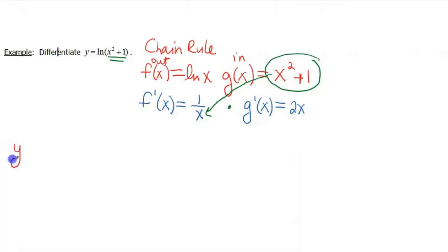So let me write it all out so we can see what that looks like. We're gonna do 1 over x squared plus 1, because that's our inside function, times the derivative of that inside function, which is 2x. So again, you can pretty this up just a little bit. That would just be 2x over x squared plus 1.